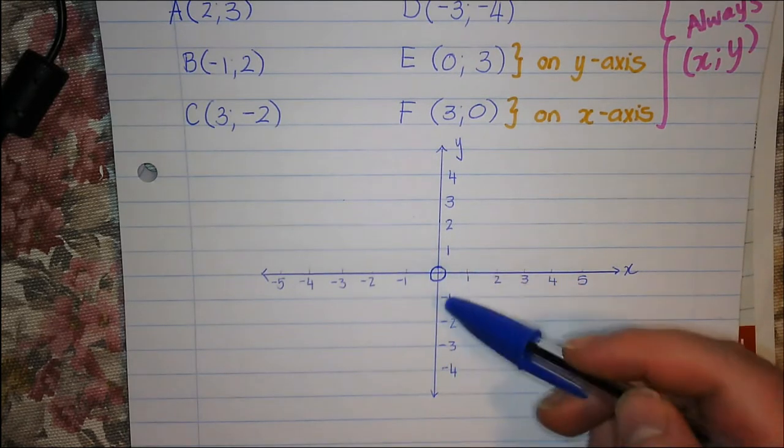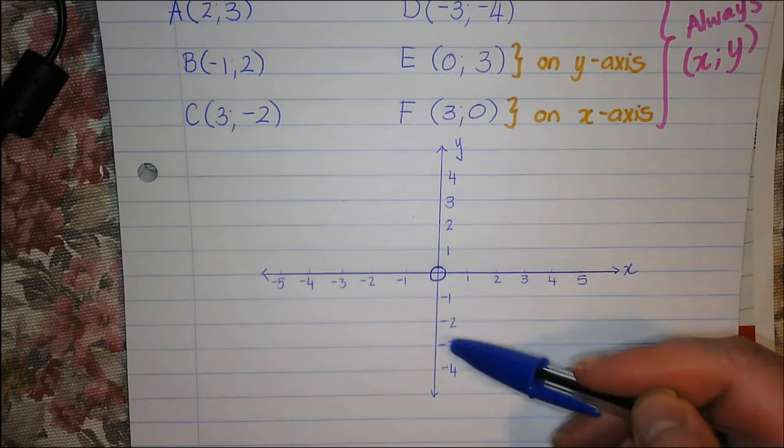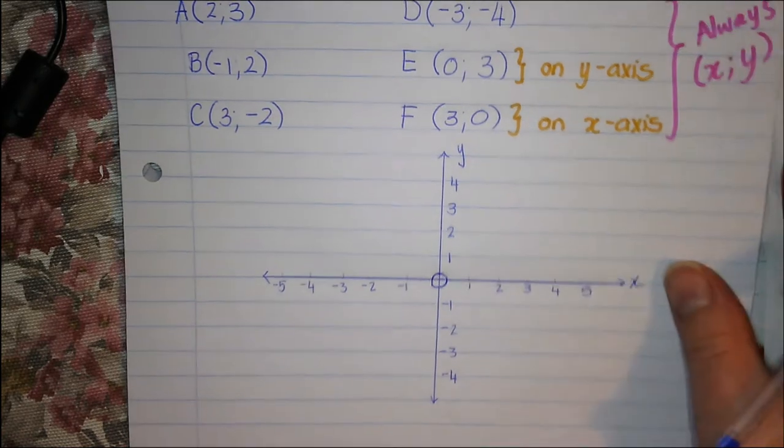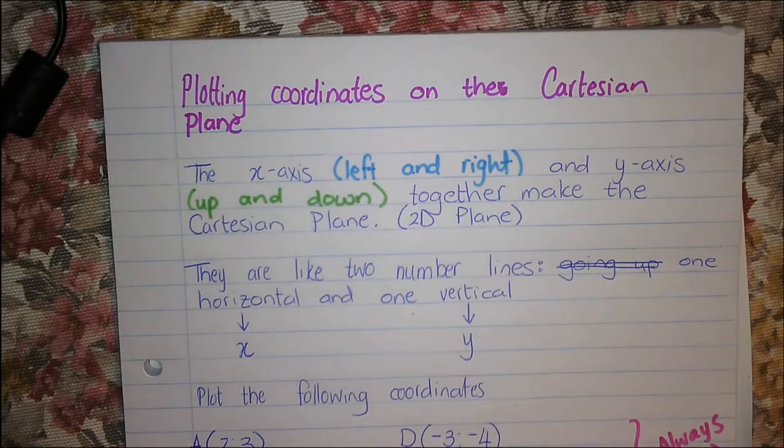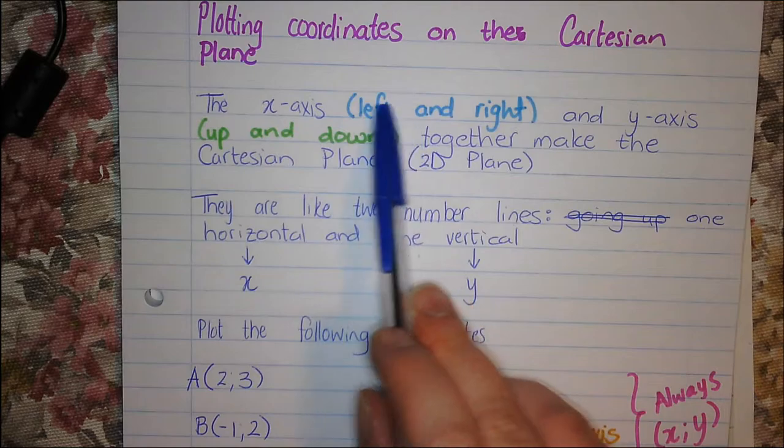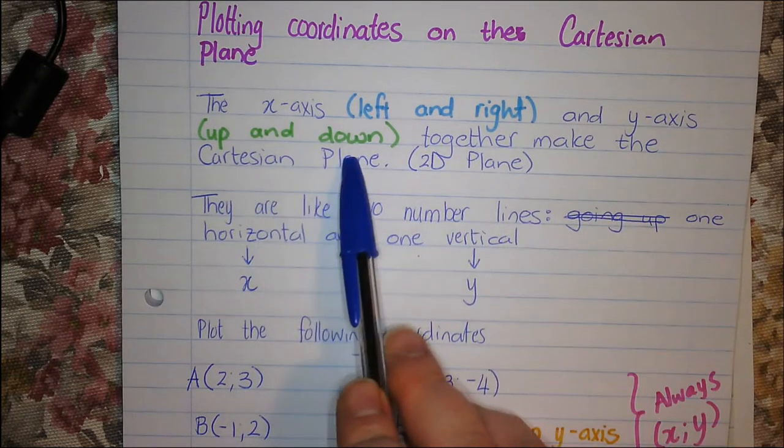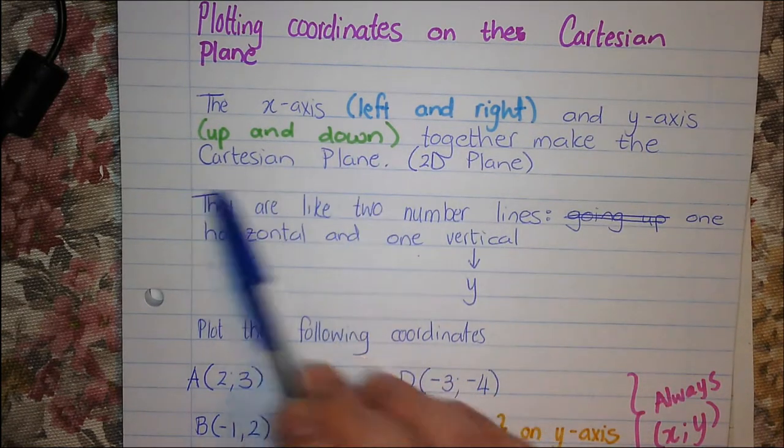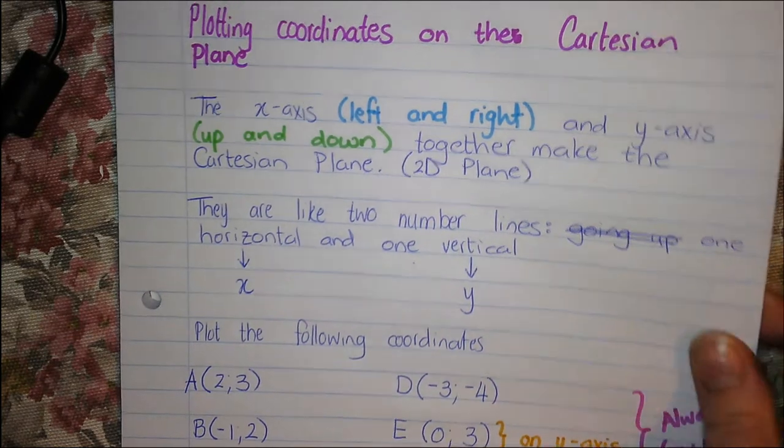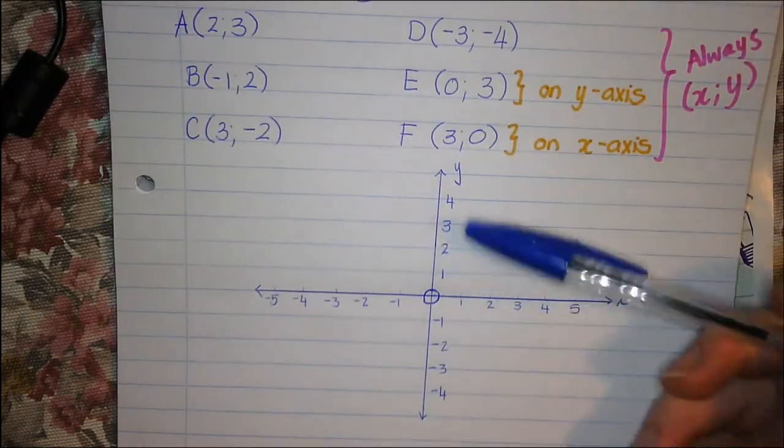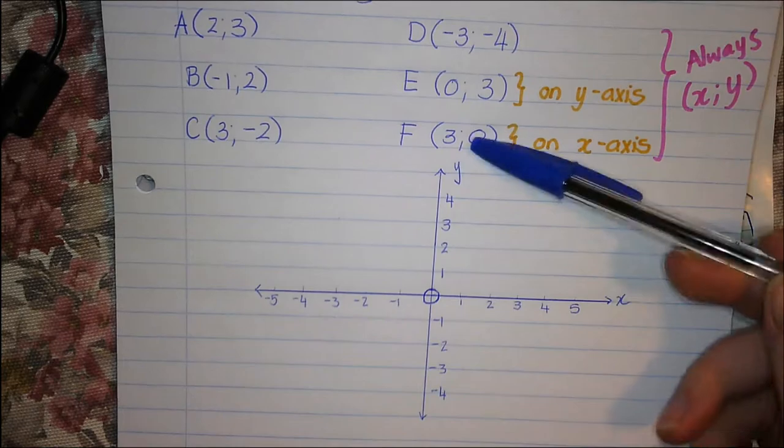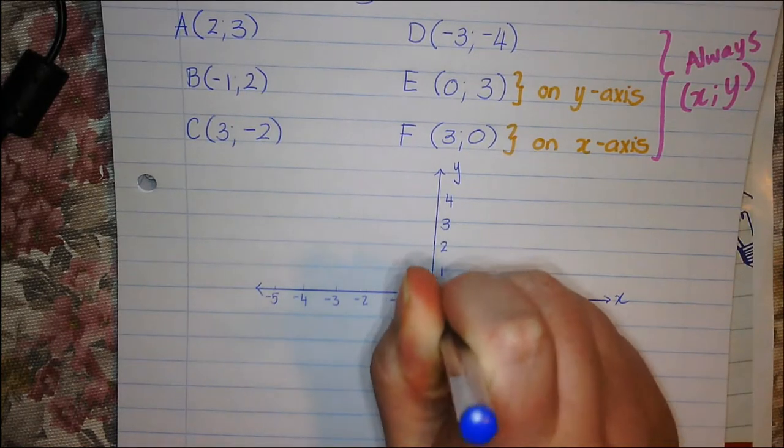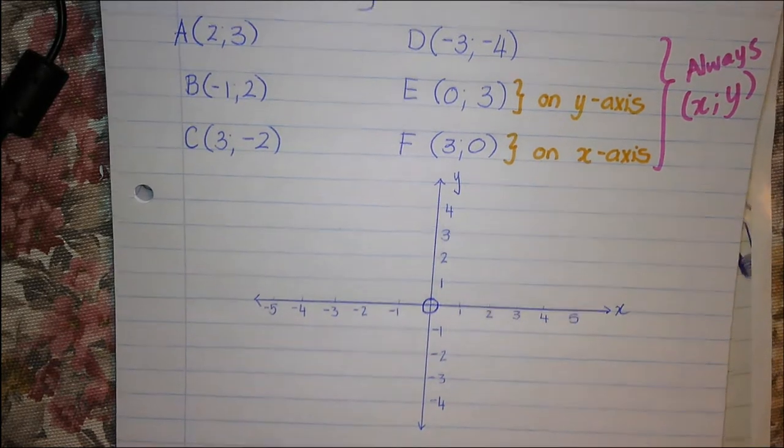Zero is in the middle, so it's negative 1, negative 2, negative 3, negative 4, and so on. So the x-axis moves left and right, and the y-axis up and down. Together they make up the Cartesian plane or the 2D plane. You can move left and right, you can move backwards and forwards, but you cannot move into the page and out of the page.